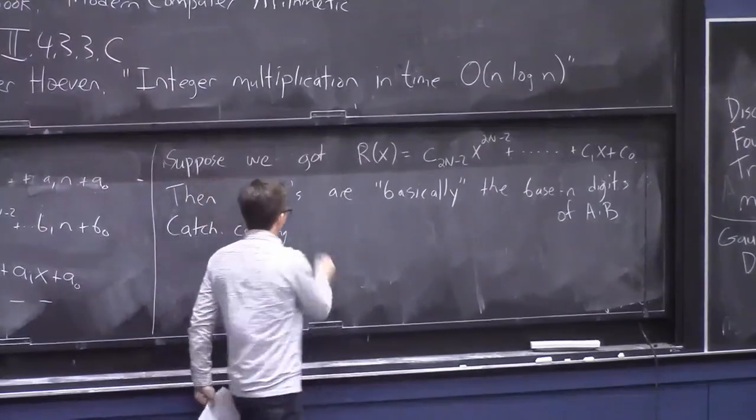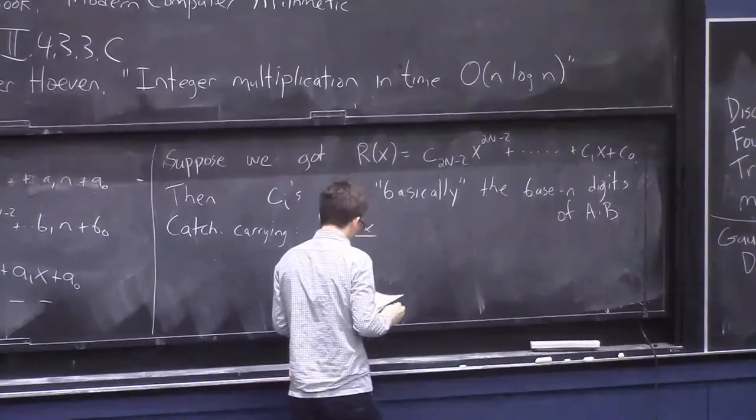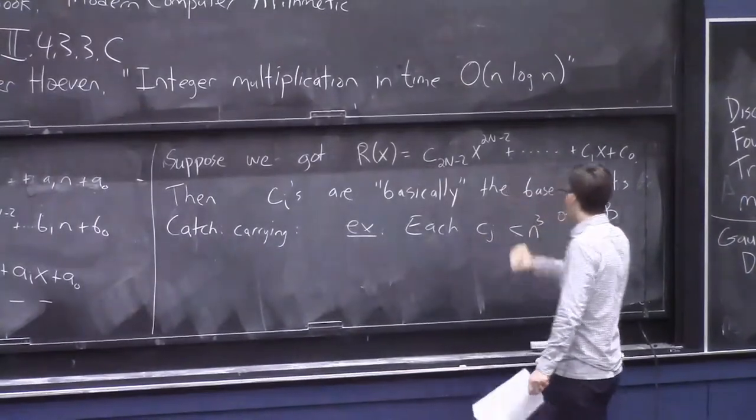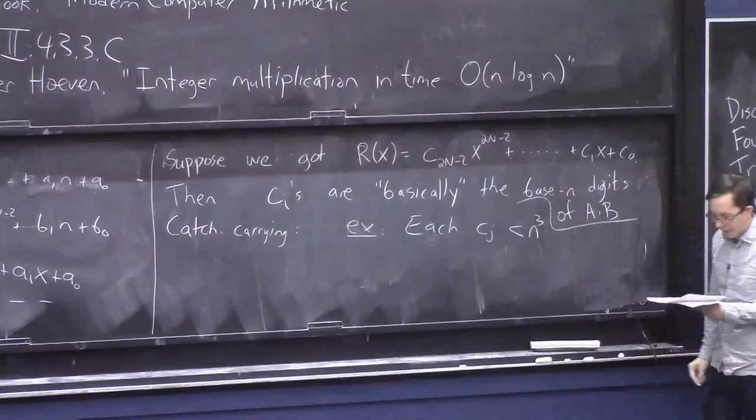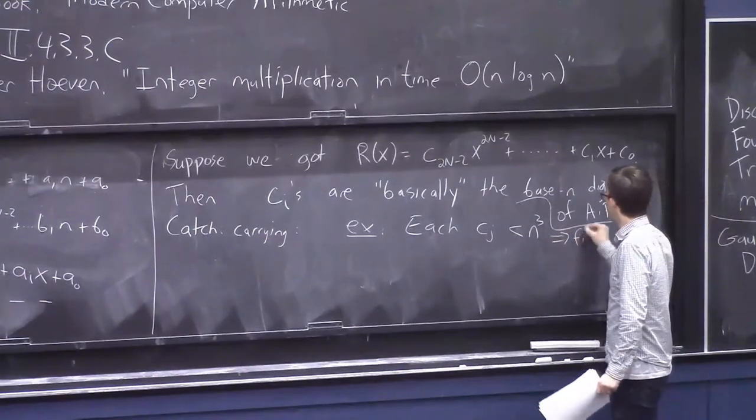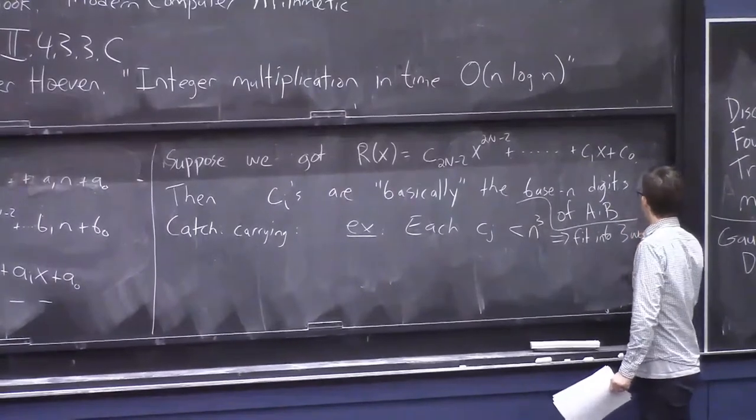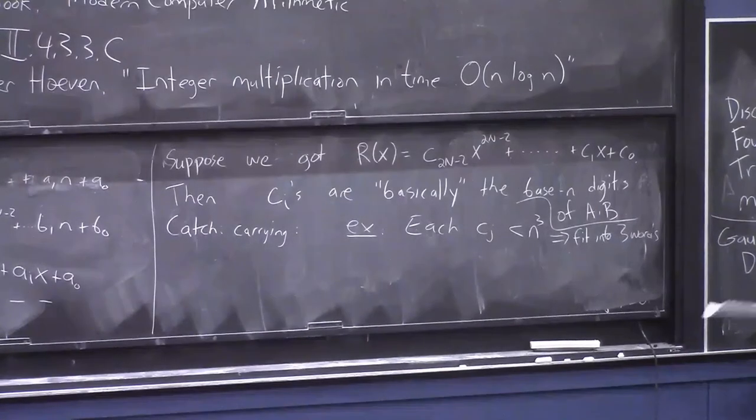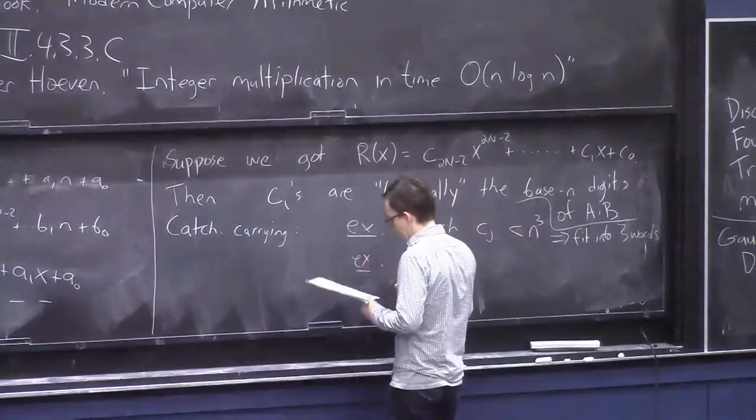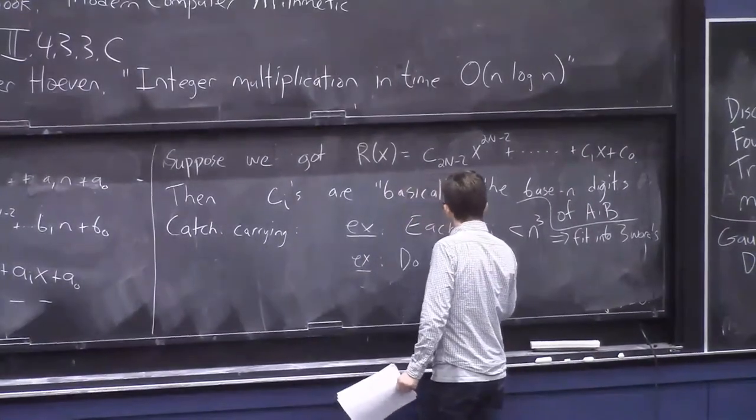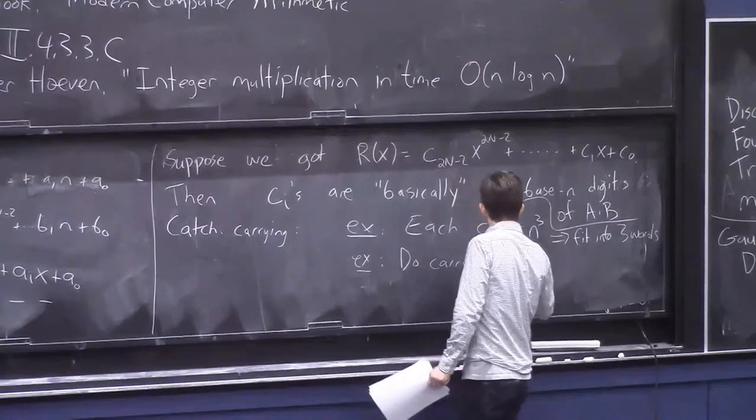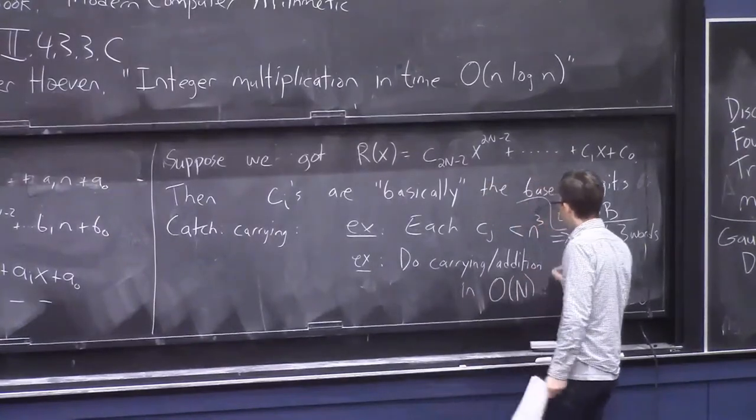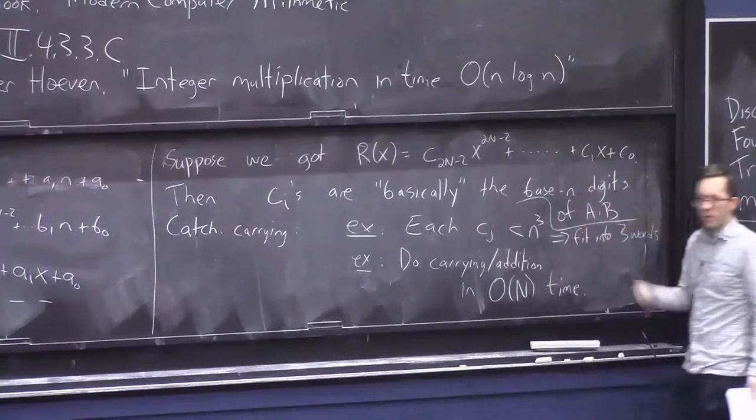But it's a very mild catch. So I will leave the following things to you as exercises. First, each coefficient C_j will be at most n cubed. And therefore, it will fit into three words. I'm sort of assuming now that my words are, as I said, exactly log base 2 of n. And then it's an exercise also for you that you can do the carrying and addition in linear time.